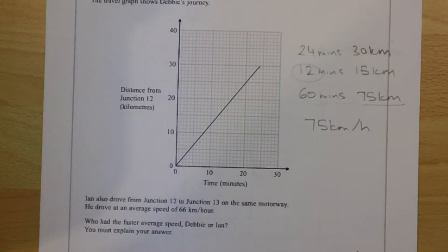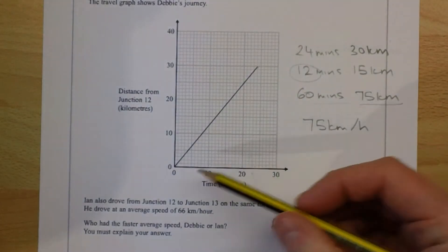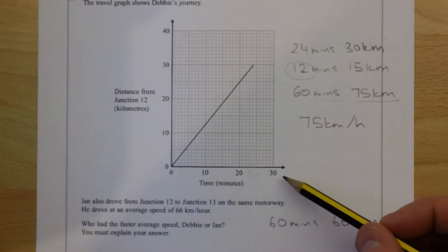Alternatively, drawing the graph for Ian. If Ian drives at 66 kilometres an hour, that means in 60 minutes, he drives 66 kilometres. That's not good for this graph because the axis only goes up to 30.